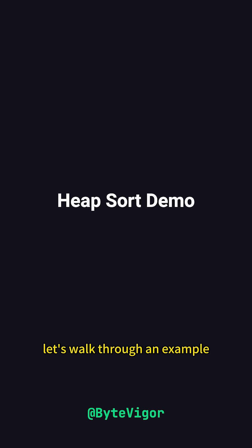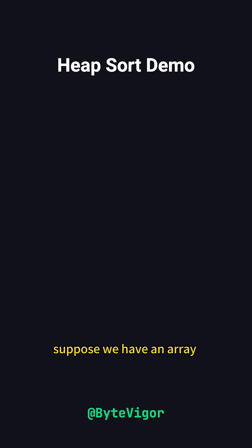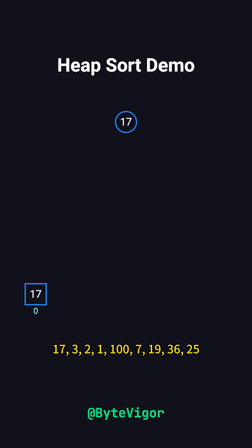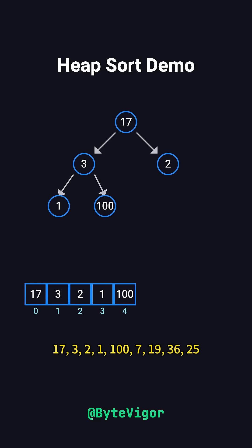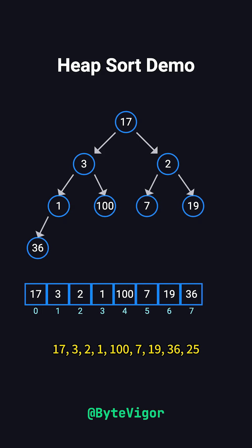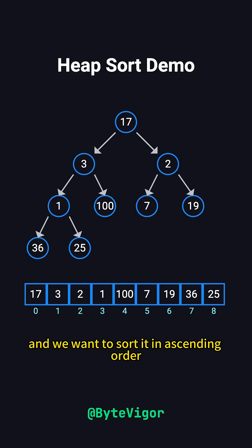Let's walk through an example. Suppose we have an array: 17, 3, 2, 1, 100, 7, 19, 36, 25, and we want to sort it in ascending order.